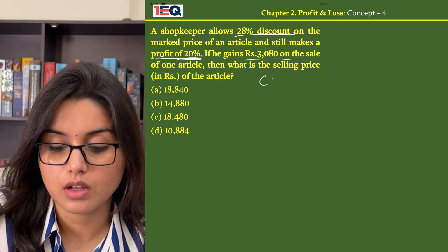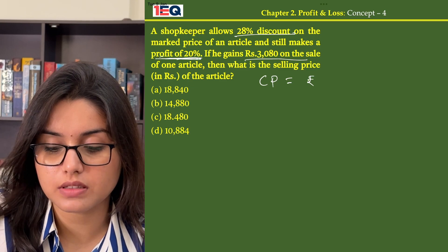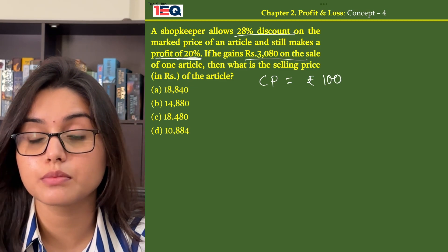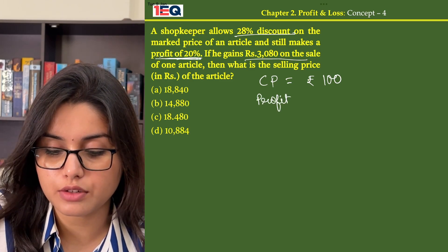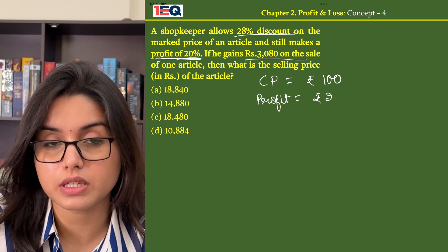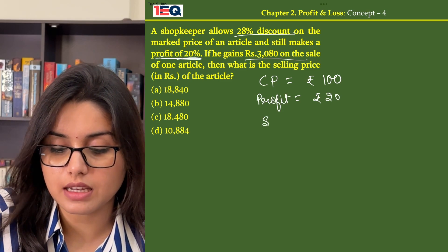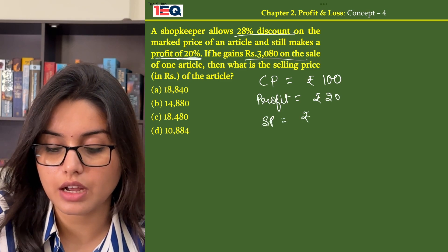Assuming that he bought the article at rupees 100, so my cost price is rupees 100. And when the profit is given as 20%, so my profit amount will be 20% of 100, that is rupees 20. And then my selling price becomes rupees 100 plus 20, that is rupees 120.